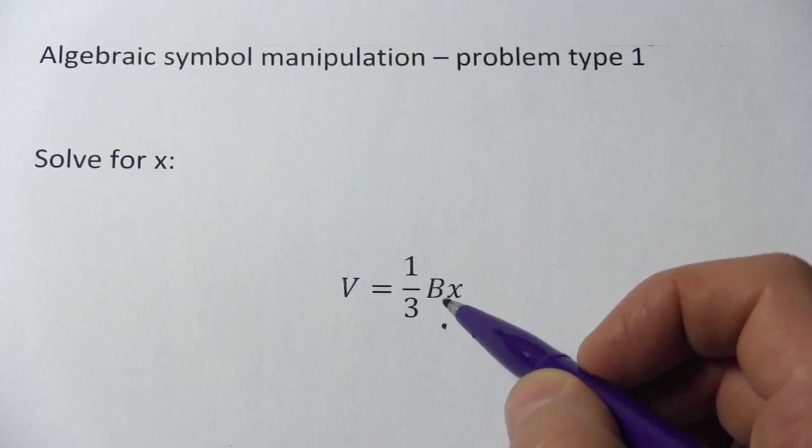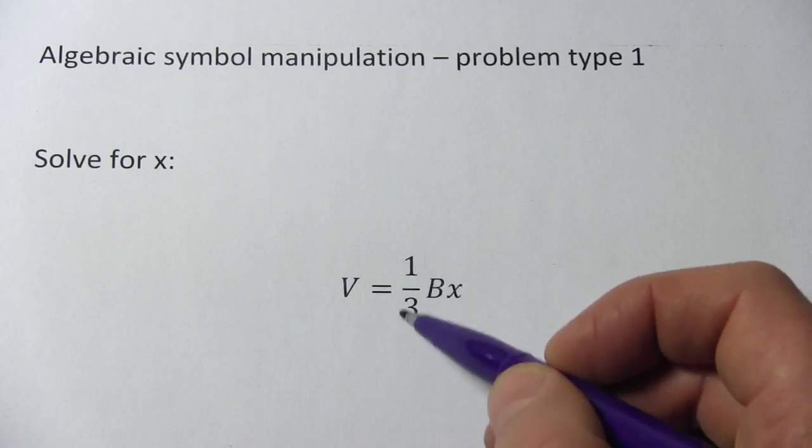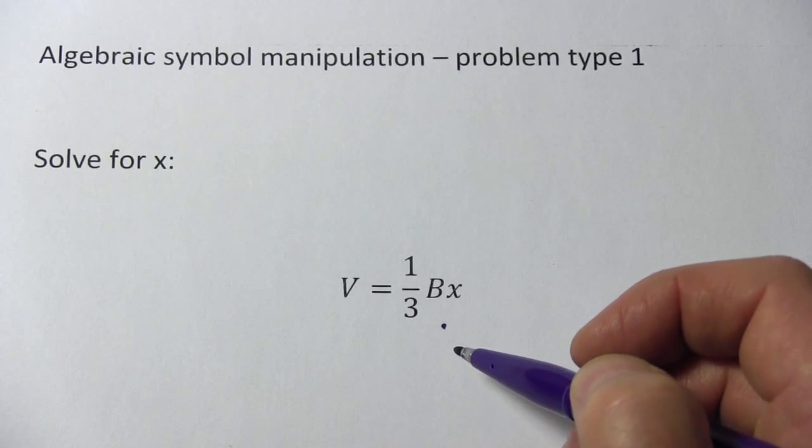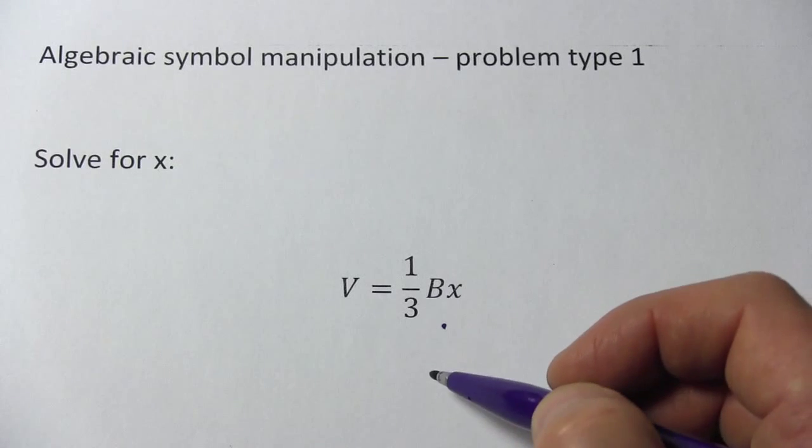Well, the way I like to start is to look at what's being done to x. It's being multiplied by 1/3, and it's being multiplied by B. Let's try to take care of those one at a time.